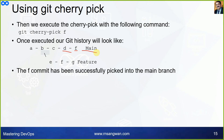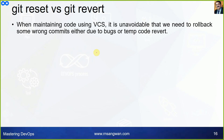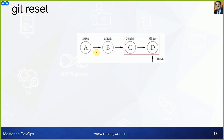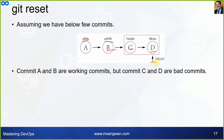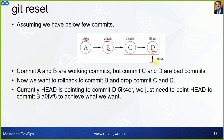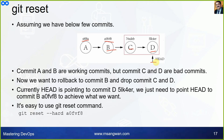Git reset versus git revert. When maintaining code using version control systems, it is unavoidable that we need to roll back some wrong commits, either due to bugs or temporary code. Two major ways used by developers are git reset and git revert. Git reset: assume commits a, s8, f8, x, b, c, d and HEAD is at d. Commits a and b are good commits, but c and d are bad commits. We want to roll back to commit b and drop c and d. The command is: git reset --hard <commit-b-sha>.